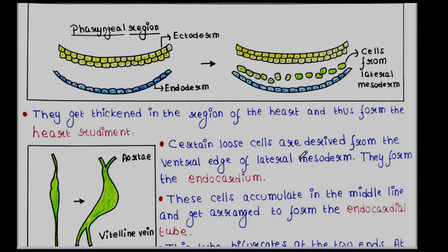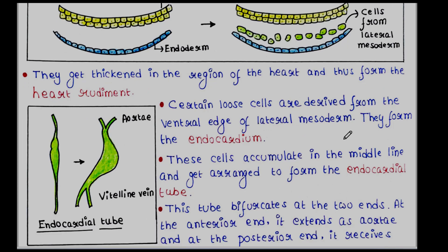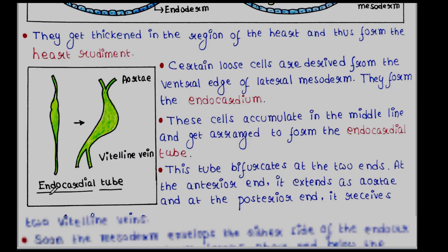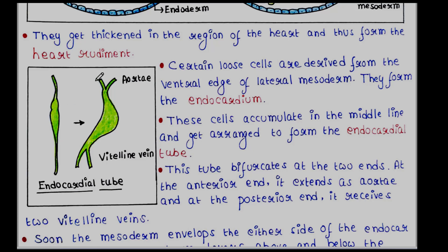Certain loose cells are derived from the ventral edge of lateral mesoderm and they form the endocardium. These cells accumulate in the middle line and get arranged to form the endocardial tube. This tube bifurcates at the two ends — at the anterior end it extends as aorta, and at the posterior end it receives the two vitelline veins.